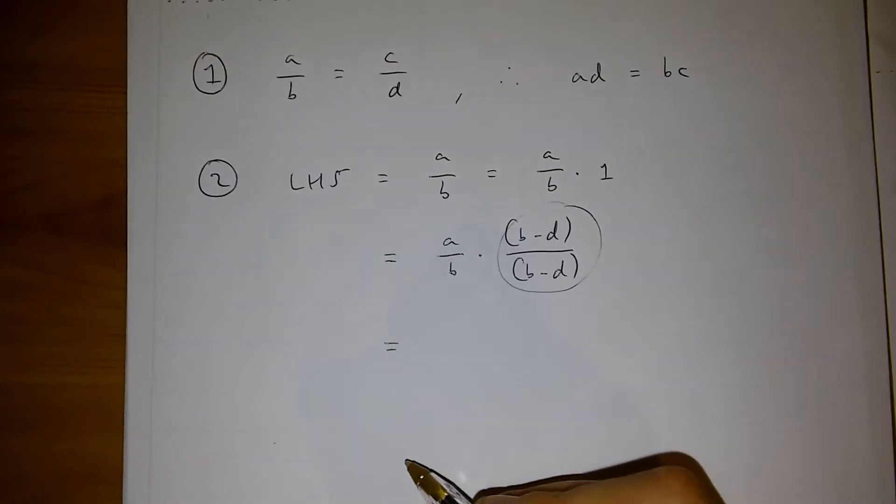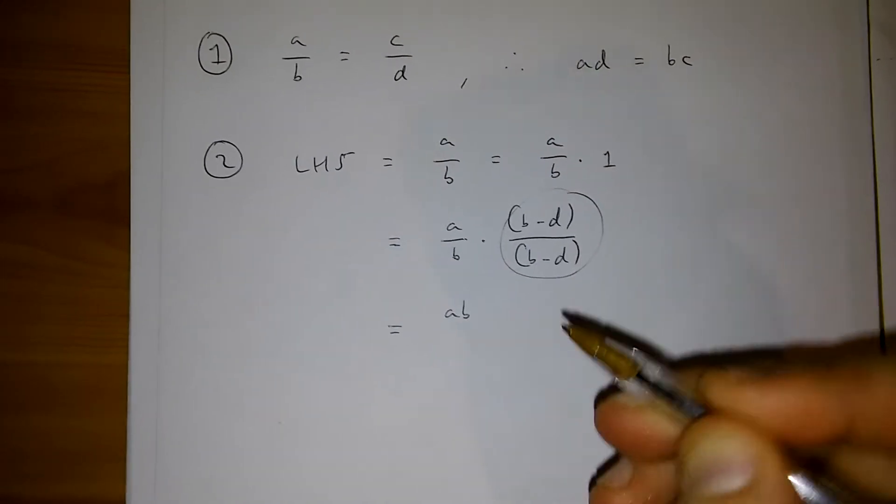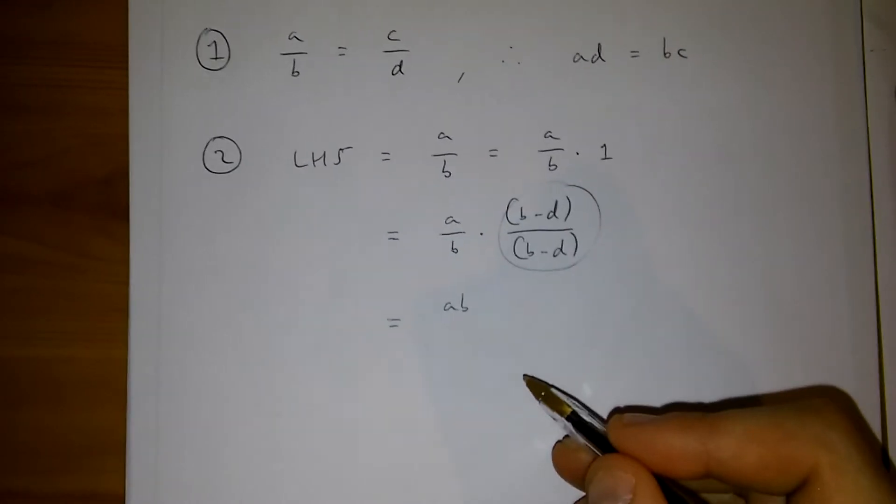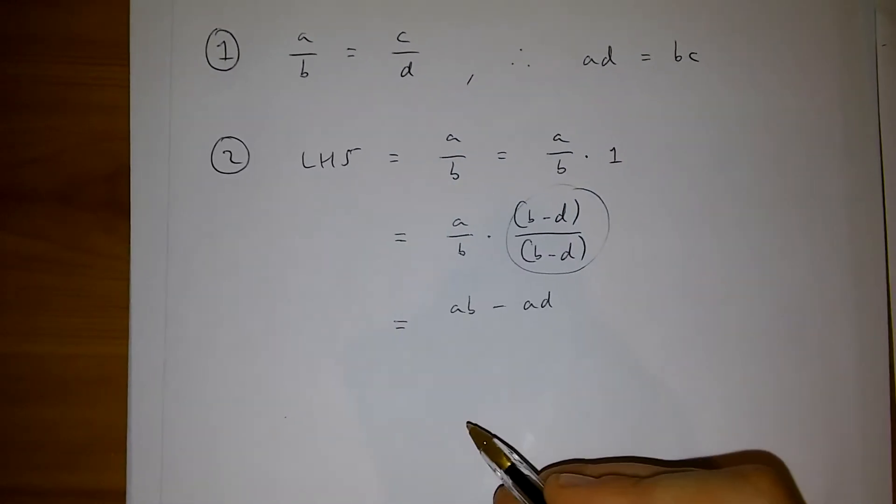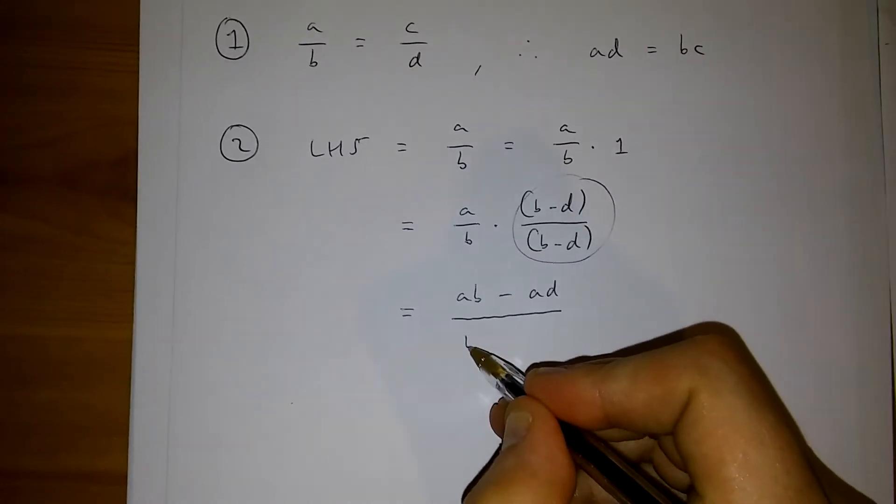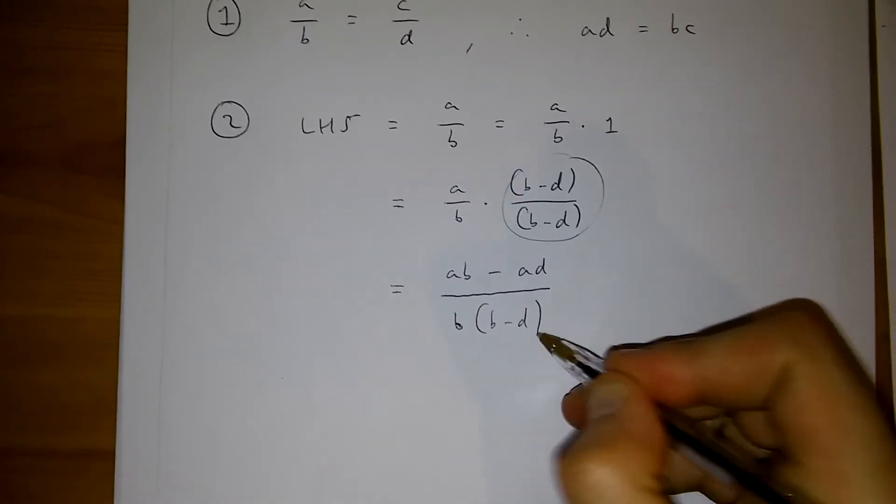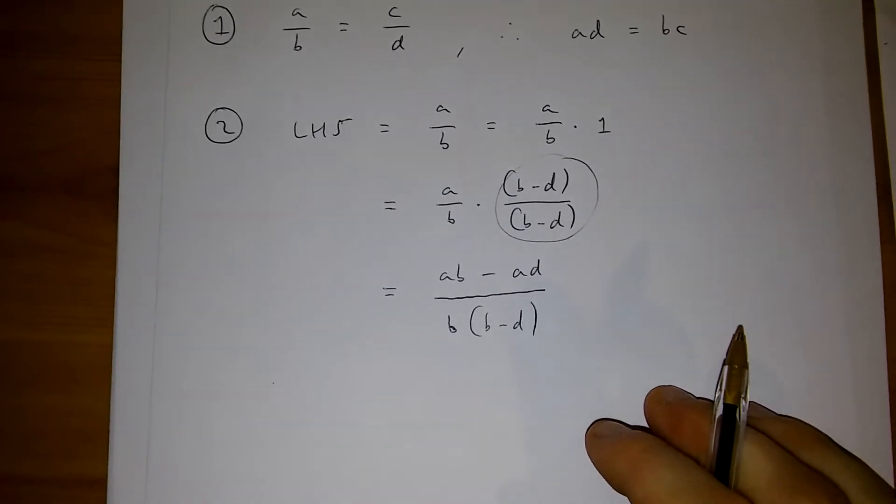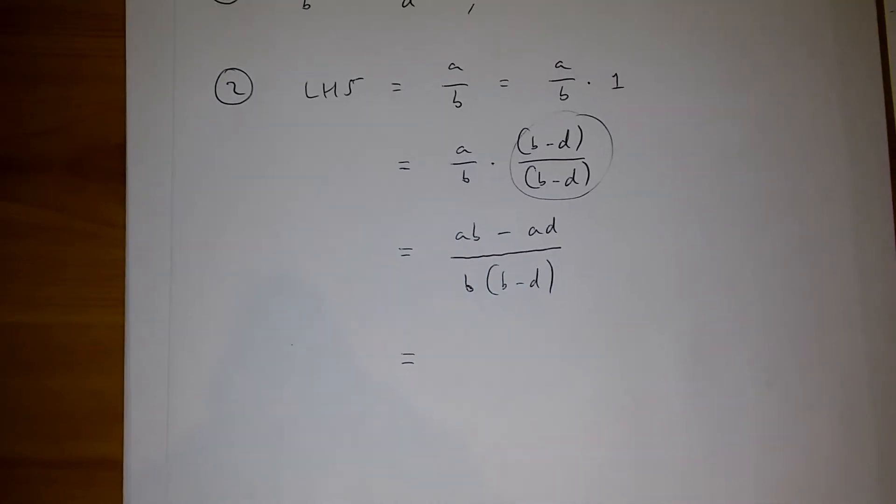If I do this, I get a times b minus ad over b multiplied by b minus d in brackets. And this is equal to